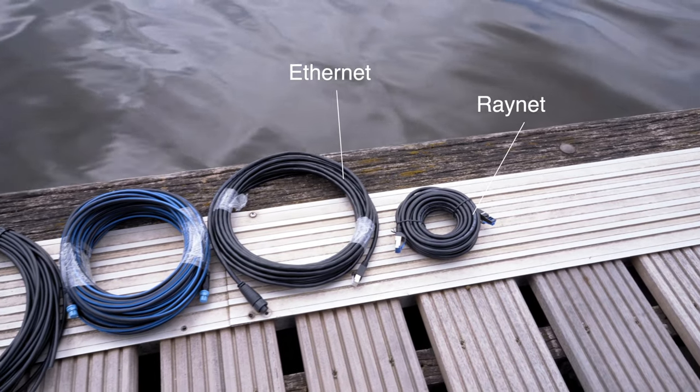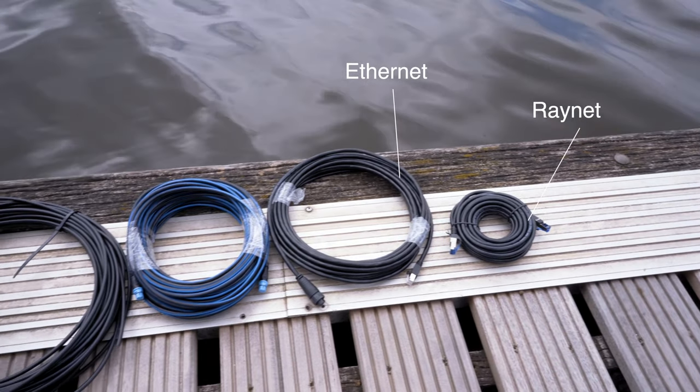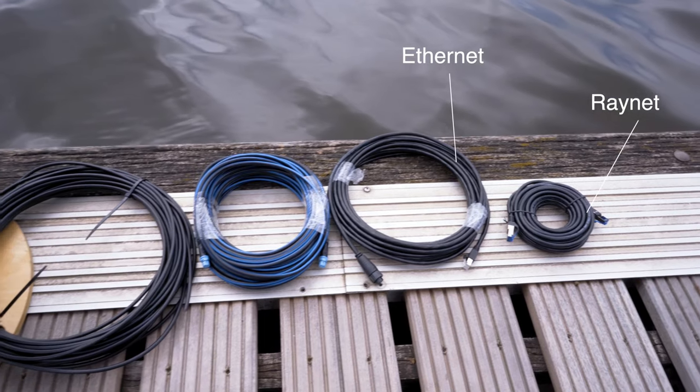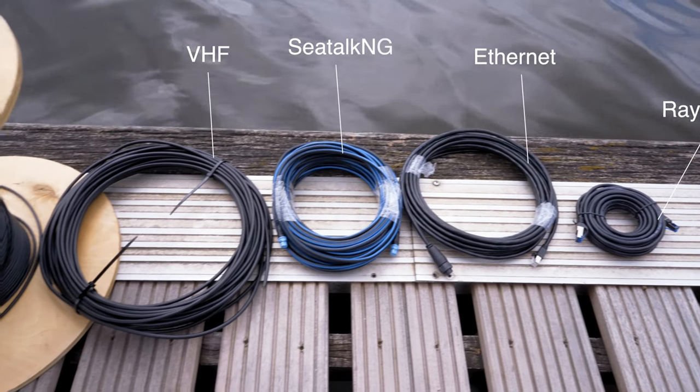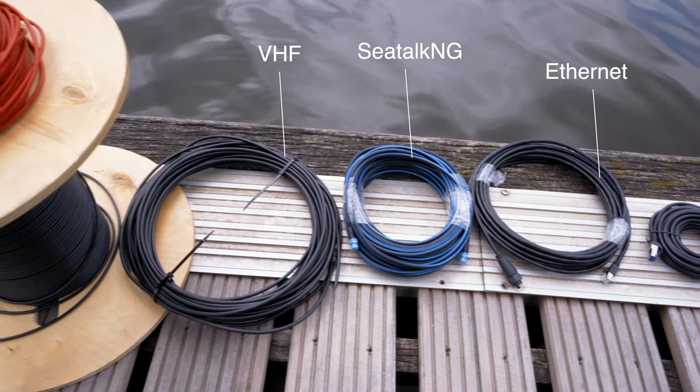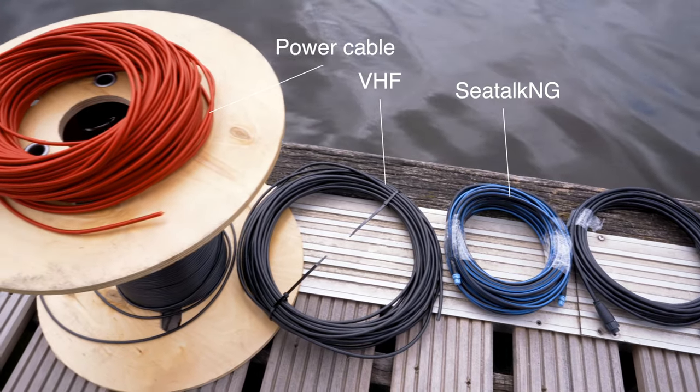We will be routing Ethernet and Raynet cables to connect the network switch with a chart plotter, as well as a C-torque NG backbone cable and a VHF cable to connect the VHF antenna and of course the cables for the power supply.